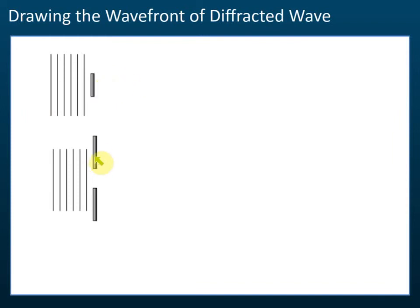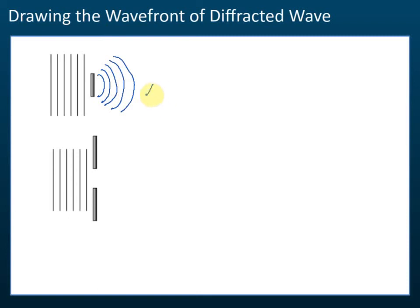They will give you an obstacle or they will give you an opening. A lot of students, they don't know how to draw. They always think that diffraction is the spreading of the wave, so they draw something like this. Okay, this is wrong. Why? Because for obstacles, this part of the wave is reflected back, so there's no wave here. So this is wrong.